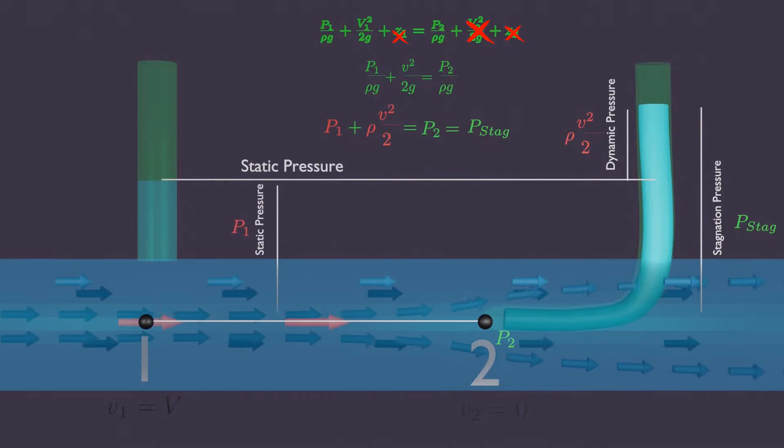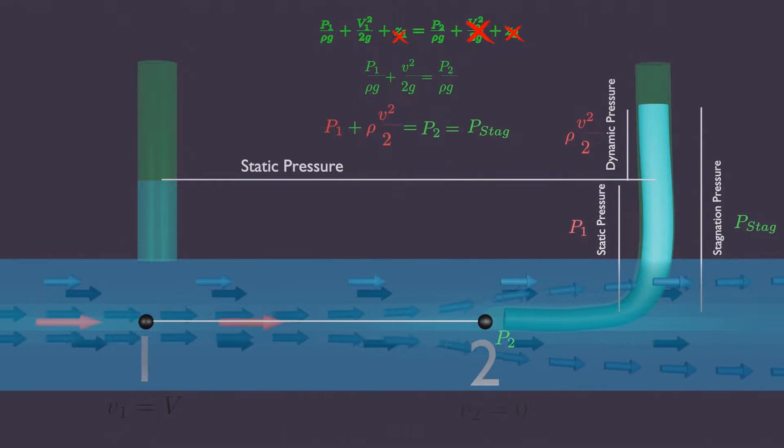Static pressure is same for both points. Whereas stagnation pressure or the total pressure P2, at PETA tube is same.